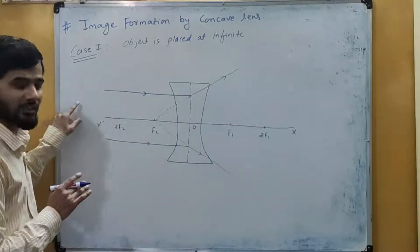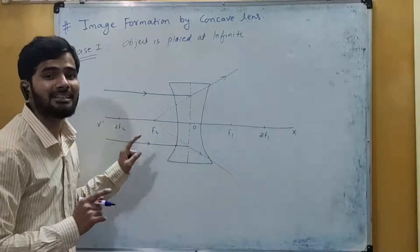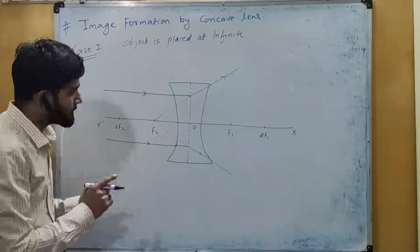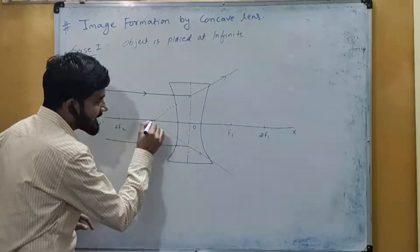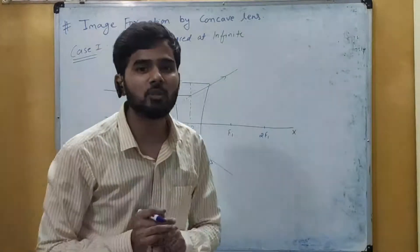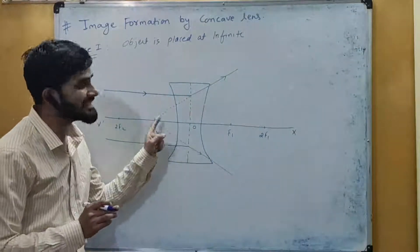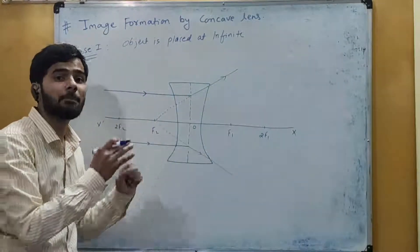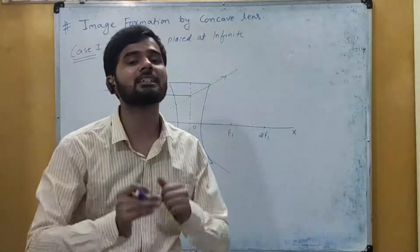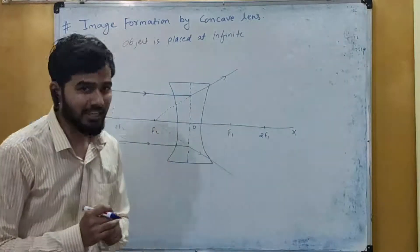So if the object is at infinite, then the image is formed at the second principal focus. But here, this image is virtual and erect. Why is it virtual and erect? Because we can see that the light rays only appear to meet — and whenever light rays appear to meet, the image is virtual and erect.